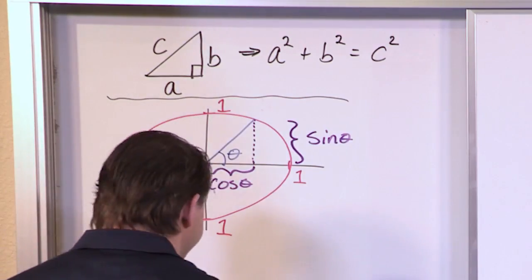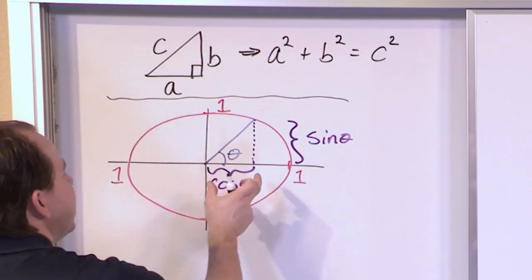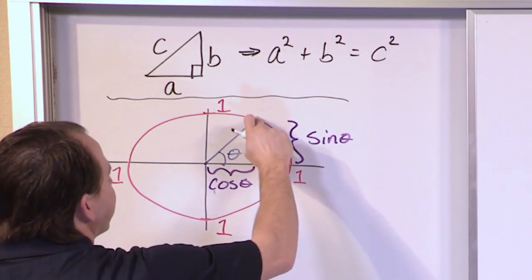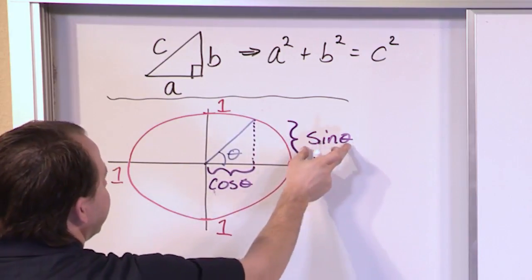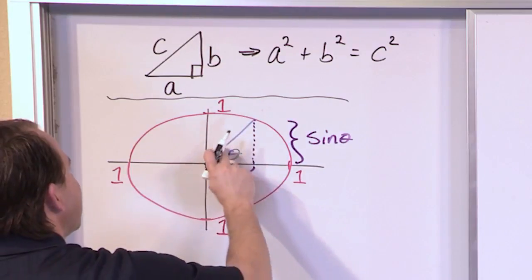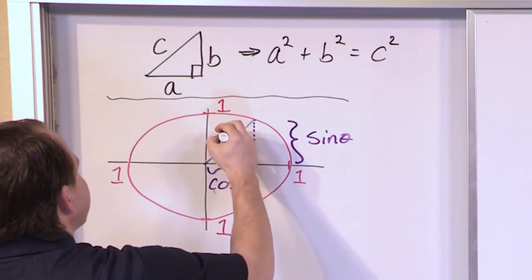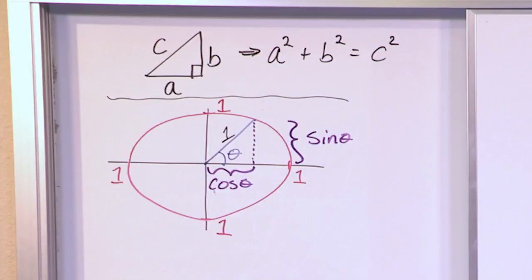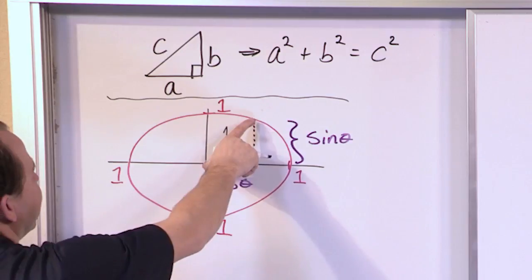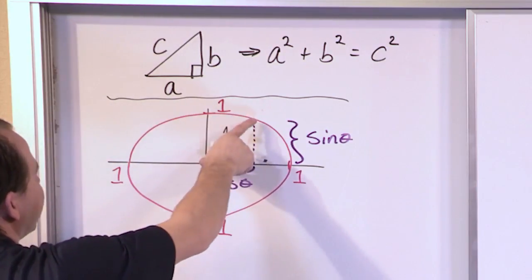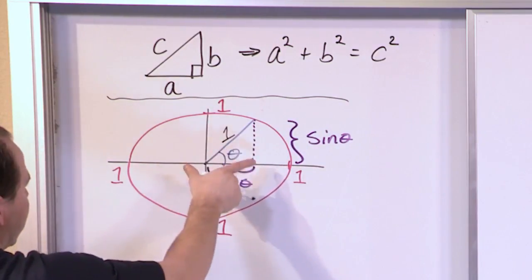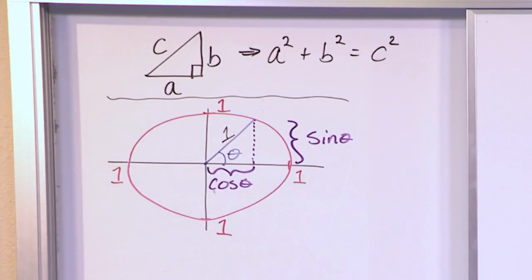As you walk around the unit circle, sine and cosine change because the projections along the axes change. But don't forget — this is a unit circle. If you think of this as a triangle, this leg we call sine theta, this leg we call cosine theta. What would the hypotenuse be? It goes all the way to the unit circle, so that leg always has a distance of one. No matter what angle this line points around the unit circle, the hypotenuse is always one.